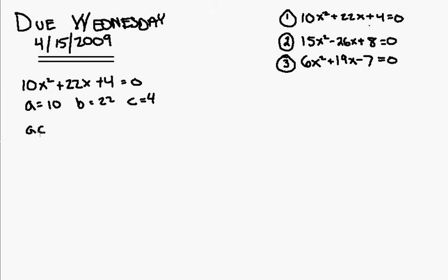We're going to multiply A and C together. So, that's going to be 10 times 4, which is going to give me 40. So, what two numbers multiplied equal 40 and added equal 22?